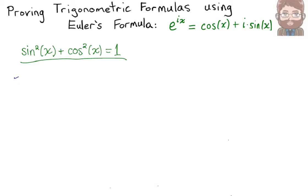First, use the fact that e to the ix, we know that's cosine of x plus i times sine of x. We also use the fact that e to the negative ix, which is e to the i times negative x. That's the same thing as cosine of negative x plus i times sine of negative x.